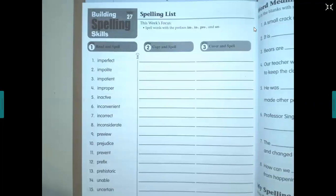Today we are in language class and we are looking at spelling list 27. So this week we want to study prefixes im, in, pre, and un. All right, so the prefixes im, in, and un mean not, and the prefix pre means before, so that will help us in understanding the meaning of our spelling words this week.